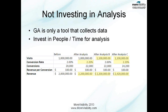Not investing in analysis and in people is probably the number one problem. To borrow from Avinash, who we mentioned before, his 90-10 rule: of every $100 you're spending on marketing, $10 should be on the tool and $90 on people to really help you with the analysis part.